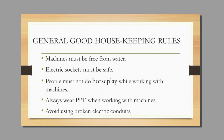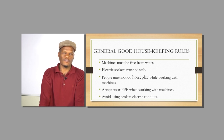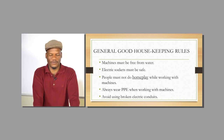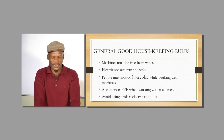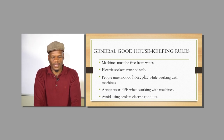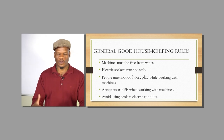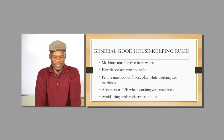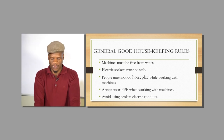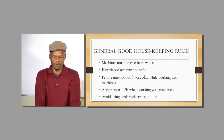We have some general good housekeeping rules that we must follow, because if you don't stick to them, you might injure yourself or have fatal injuries in the workshop. Number one, the machine must be free from water — if it's powered by electricity, you know electricity and water are not good friends. Make sure any electrical socket is fully sealed. Avoid horseplay in the workshop, always be equipped with PPE, and avoid any open circuits on the floor.